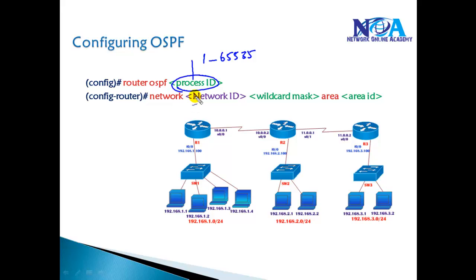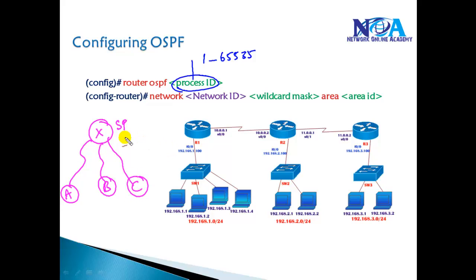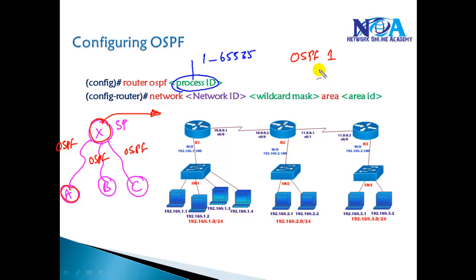The process ID identifies an OSPF routing process running on a router. For example, if a service provider router is connecting to Customer A, Customer B, and Customer C, and all are running OSPF, the service provider can run three separate OSPF processes — process ID 1 for Customer A, process ID 2 for Customer B, and process ID 3 for Customer C. This way, multiple OSPF instances can run on the same router without interfering with each other.